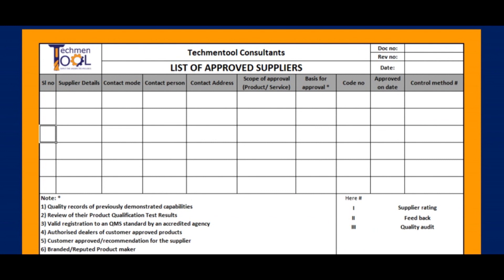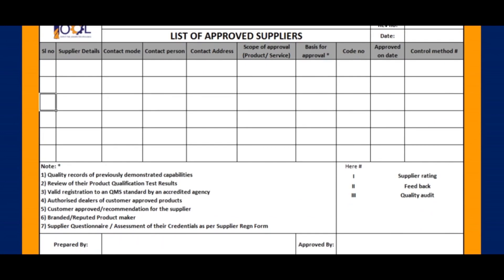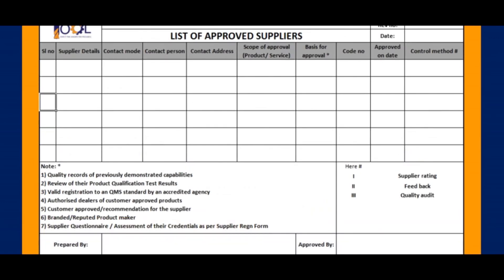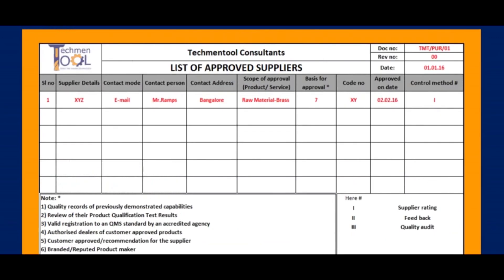This is the general format of approved suppliers. It consists of information like supplier details, contact person and address, scope of approval, basis for approval, allotted code number for the supplier, date of approval, and control method. The control method is one of three factors: supply rating, feedback, or quality audit.